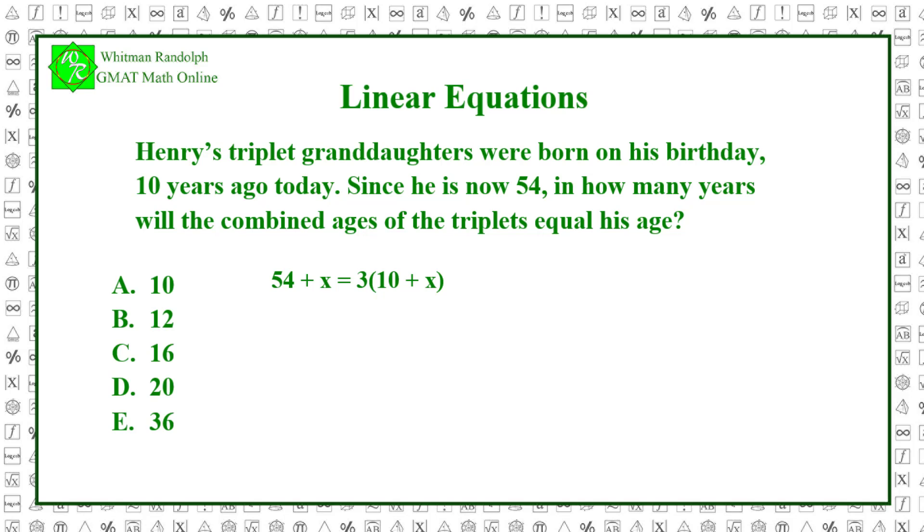Now we solve the equation for x. 54 plus x equals 30 plus 3x. So, 54 minus 30 equals 3x minus x. Therefore, 24 equals 2x and 12 equals x.